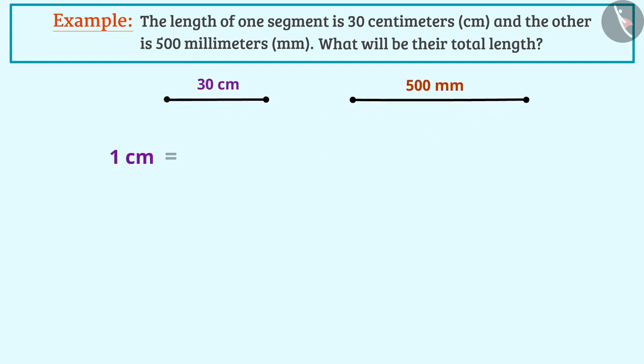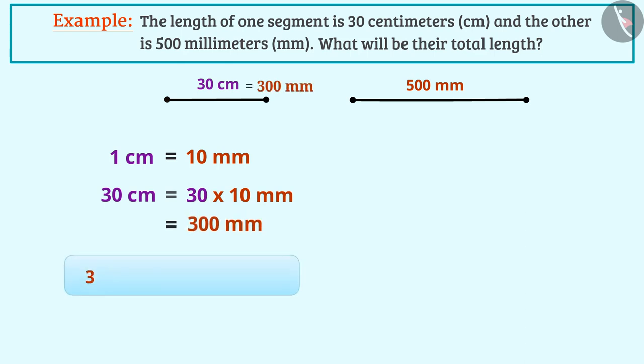1 cm is 10 mm. In this way, 30 cm is equal to 30 multiplied by 10 mm, i.e. 300 mm. Now, we can add the measurements of the line segments when the units are equal. This will give us the total length of the line segments 800 mm.